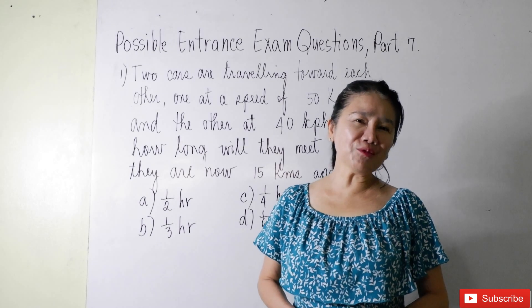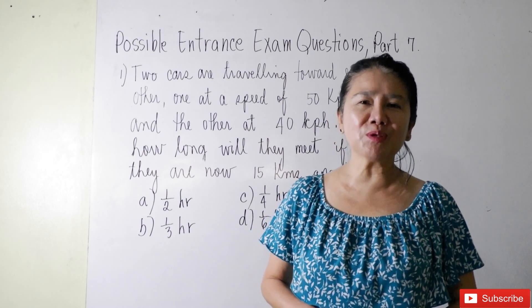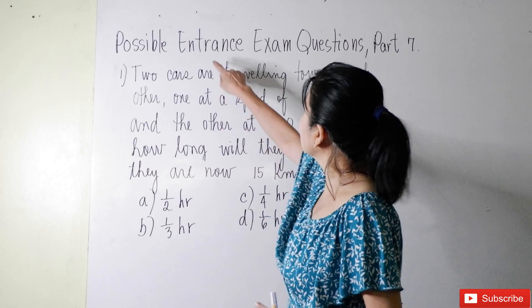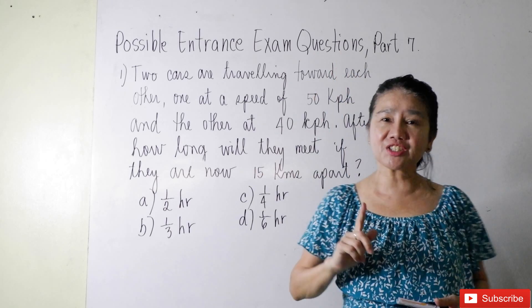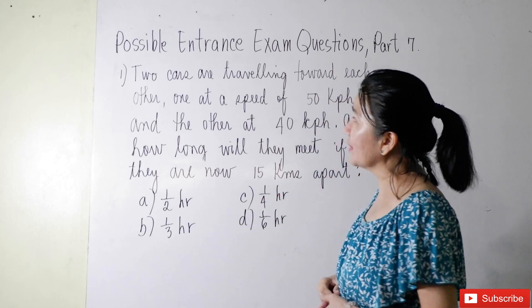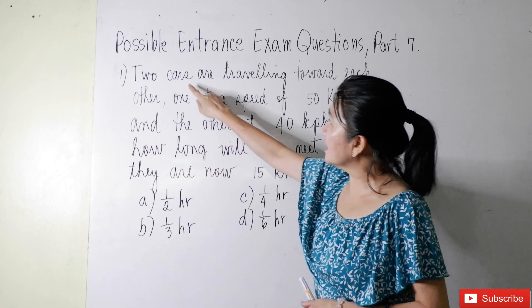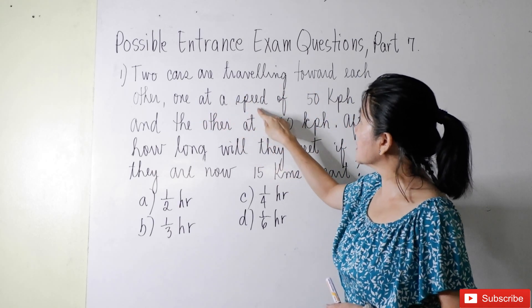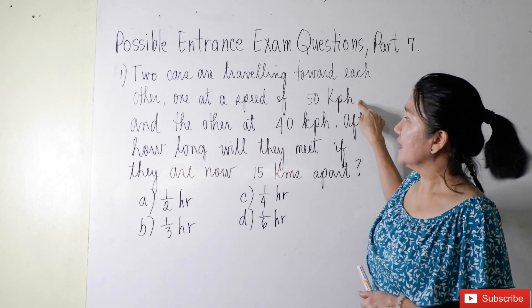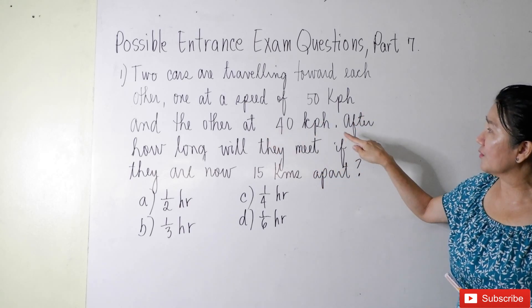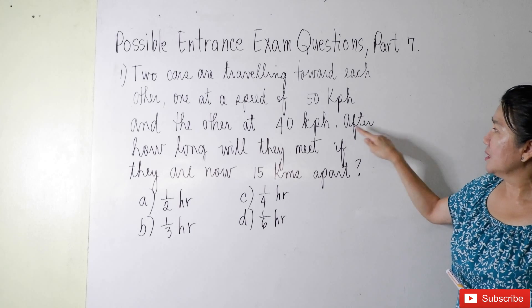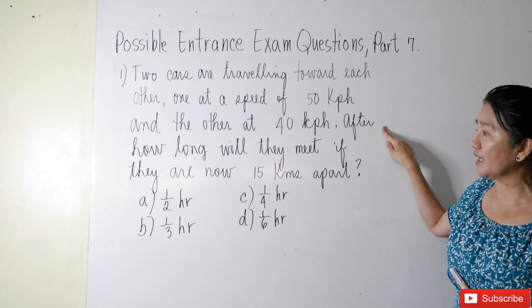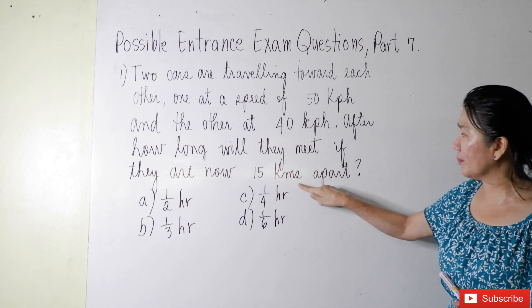Hello, everyone. Welcome to my channel, Math with Ms. O. This is now the continuation of our possible entrance exam questions, Part 7. And the question is: two cars are traveling toward each other, one at a speed of 50 kilometers per hour, and the other one at 40 kph. After how long will they meet if they are now 15 kilometers apart?